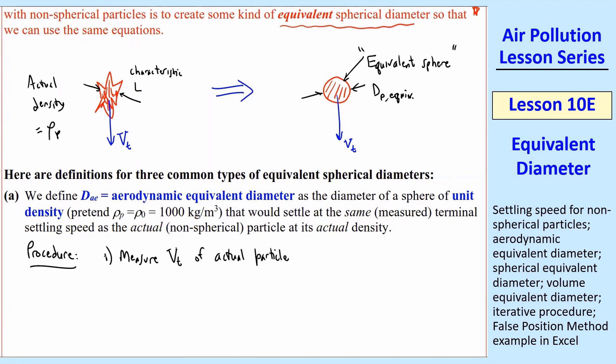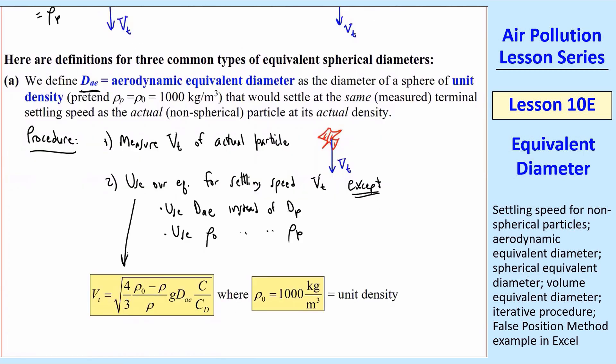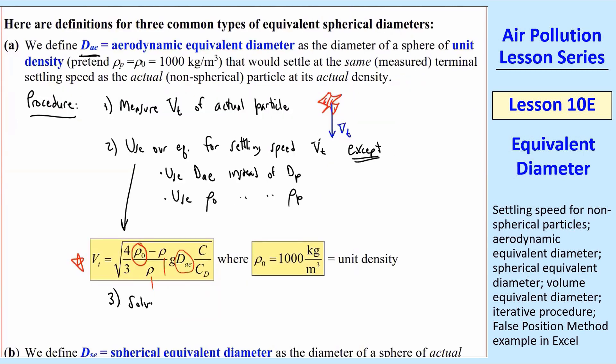Here's the procedure. You measure the settling speed of the actual particle, so that would be vₜ. Number two, you use our equation for settling speed vₜ from our previous lesson, except use dₐₑ, that's the notation here for aerodynamic equivalent diameter, use dₐₑ instead of dₚ, and use ρ₀ unit density instead of ρₚ. So we'll use these equations for that general equation that we have to iterate for settling speed, but we're going to use unit density, and we're going to use dₐₑ here instead of dₚ, but otherwise the equation is the same. The procedure's identical. Cunningham, all that stuff is identical. And then step three is to solve for dₐₑ.